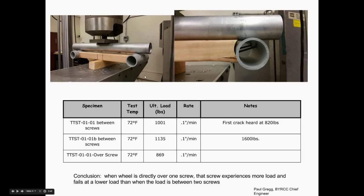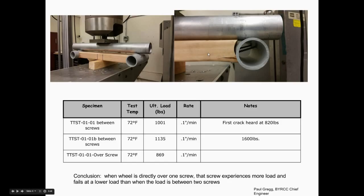You can see I did two tests where the wheel — represented by an aluminum bar — is centered between the two fasteners. I got 1,001 pounds in one test and 1,135 pounds in another test that was supposed to be identical. The different values are obviously because of variability in the wood — there's a lot of variability in wood and just where the screw sits. That's an important engineering concept: dealing with variability of materials and assembly.